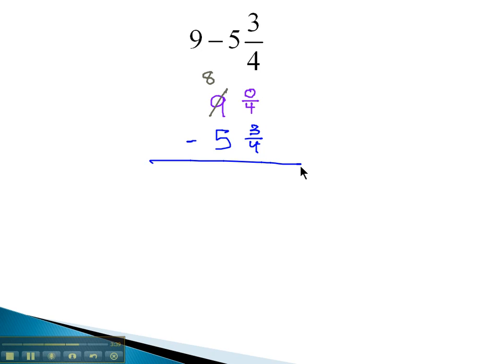The 9 drops down to 8 and we add the numerator and denominator together. 0 plus 4 is 4 and now we're allowed to subtract. 4 minus 3 is 1 fourth and 8 minus 5 is 3, giving us our final solution of 3 and 1 fourth.